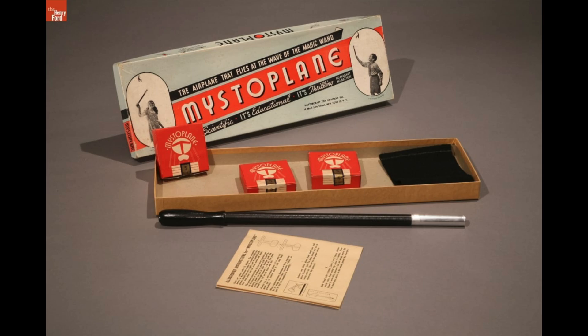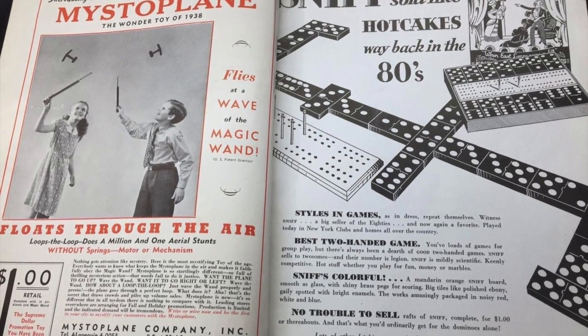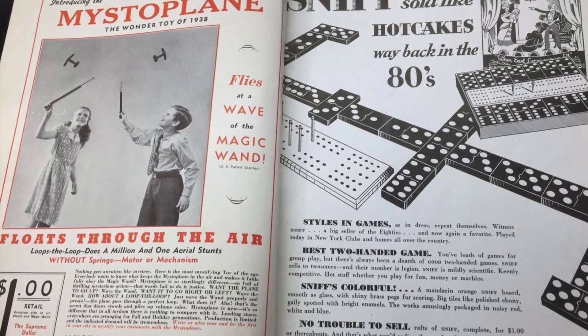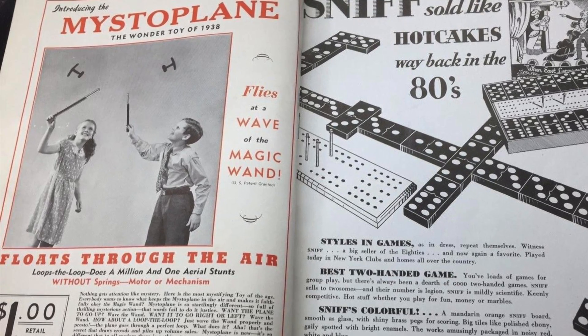The company name comes from their first big product, the Mistoplane. They called it a remote control airplane, and you controlled it with this magic wand. Really, it was based on static electricity. The plane was a spinny thing made of super light metal foil that would more or less float around on its own.